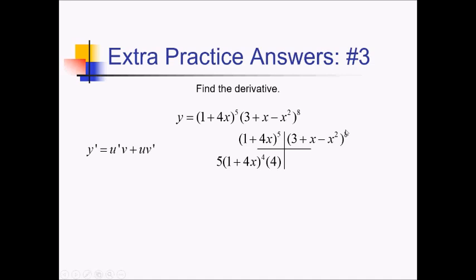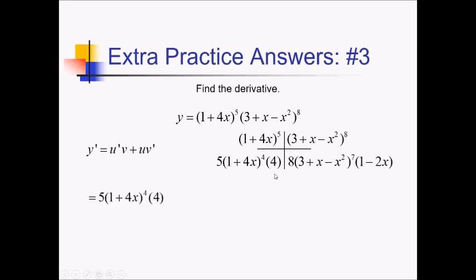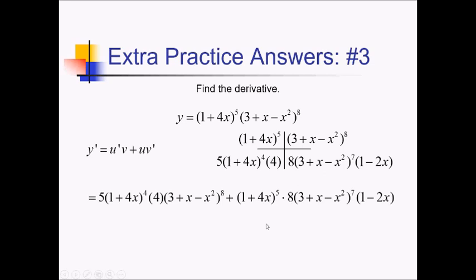Over here, I have 8 times something to the 7th — the something is all this stuff inside — times the derivative of the inner stuff, so that's multiplied by 1 minus 2x. Multiplying it all out now to get this pattern here. I've got the stuff in the lower left times the stuff in the upper right using my ribbon, plus 1 plus 4x to the 5th times all this craziness down here. I'm just going to call that done because I didn't need to simplify.